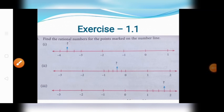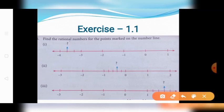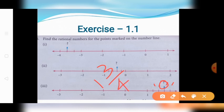Third subdivision. The number lies between plus 1 and plus 2. The number line is divided into 4 equal parts. The number is represented in the third position. Therefore, the rational number is 1 and 3 by 4. Calculating: 1 into 4 is 4, 4 plus 3 is 7. The third answer is 7 by 4.